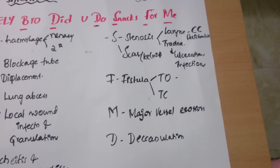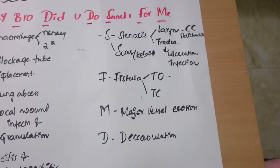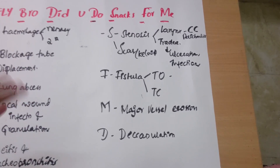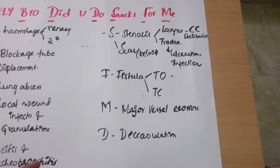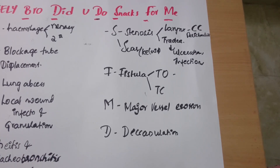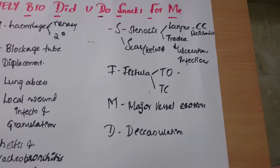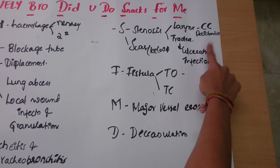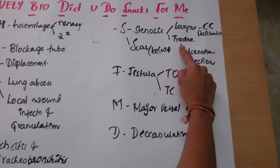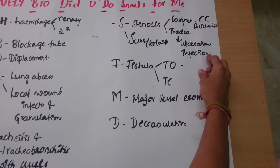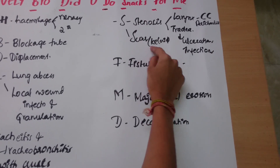Coming to the late complications: S for stenosis — stenosis of the larynx and trachea. Larynx stenosis may be due to cricoid cartilage perichondritis, and tracheal stenosis may be due to ulcerations and infections. S for scar.